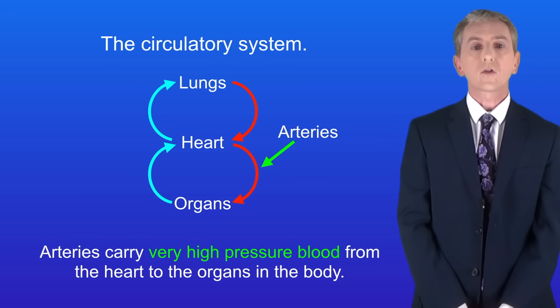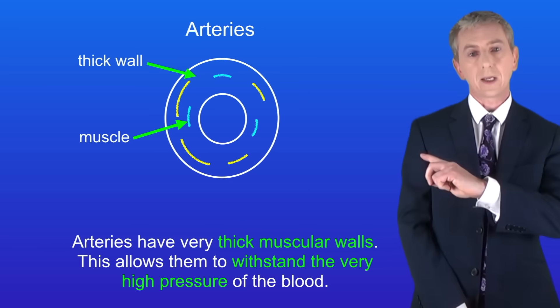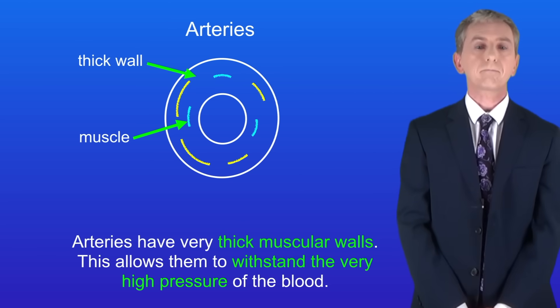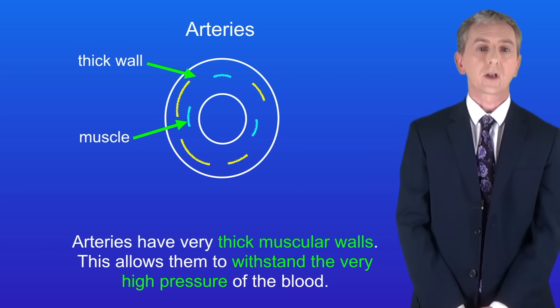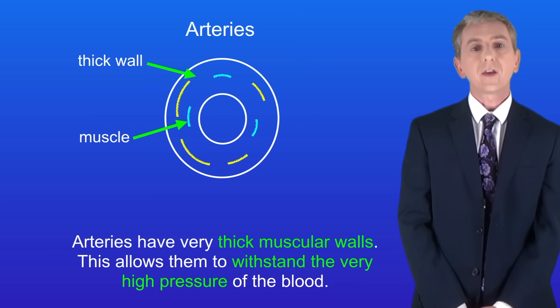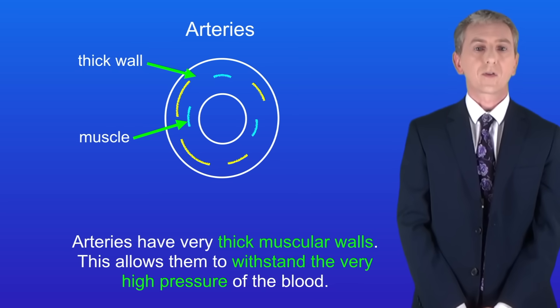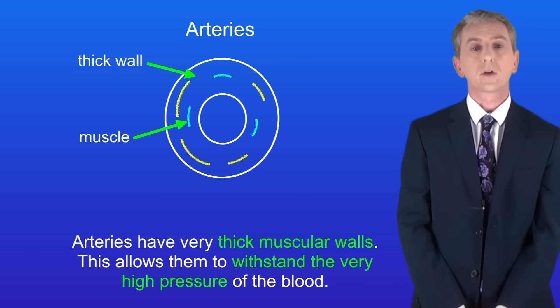I'm showing the structure of arteries here. The first adaptation is that arteries have got very thick muscular walls. This allows them to withstand the very high pressure of the blood.